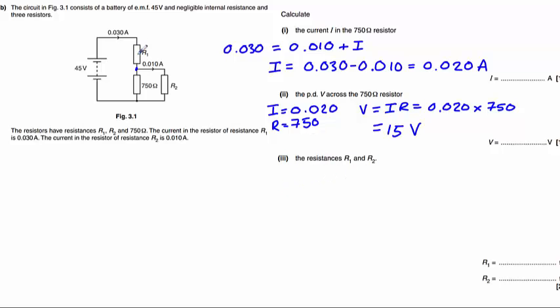Part three asks us to calculate these two unknown resistances here. We know that the potential difference across the 750 ohm resistor is 15 volts, and two resistors in parallel with each other will have the same potential difference, so it is also 15 volts across R2. So for R2, V equals 15 volts.